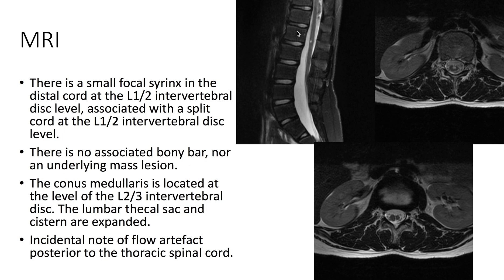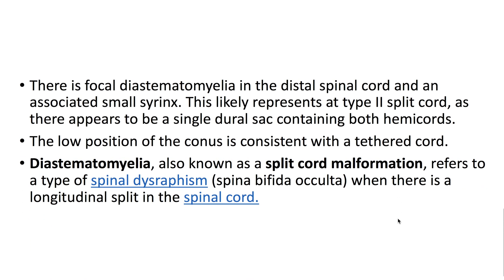On MRI, we see a small focal syrinx in the distal cord at the L1-L2 intervertebral disc level, associated with a split cord at this same level. There is a focal diastematomyelia in the distal spinal cord and an associated small syrinx.